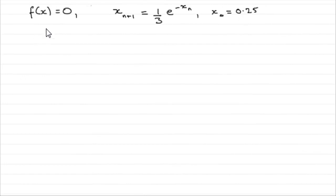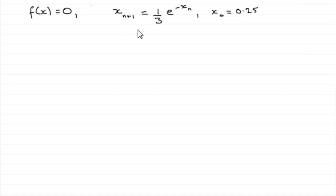In this part we're asked to solve the equation f(x) = 0 using the iterative formula x_(n+1) = (1/3)e^(-x_n), with starting value x_0 = 0.25. If you want to know how they got this iterative formula, I'll show you at the end of the video — it's not required to prove it, but on occasion you may have to show how an iterative formula is derived.